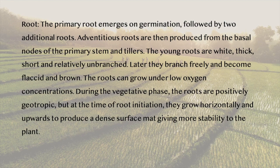The primary root emerges on germination followed by two additional roots. Adventitious roots are then produced from the basal nodes of the primary stem and tillers. The young roots are white, thick, short and relatively unbranched. Later, they branch freely and become flaccid and brown. The roots can grow under low oxygen concentrations.